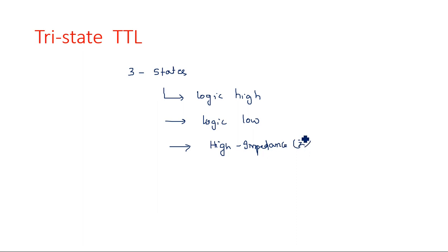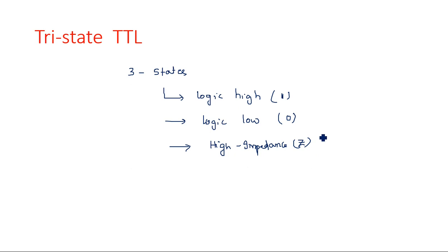We know very well what logic high is — it is when output is equal to 1. Logic low is 0. What do we mean by the high impedance state? The high impedance condition is either logic 0 nor logic 1.